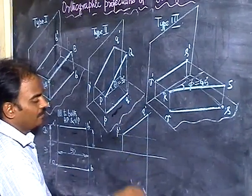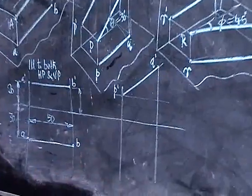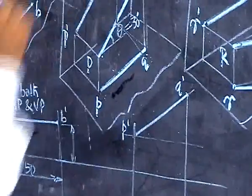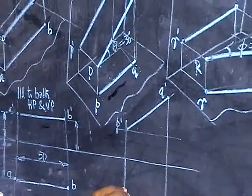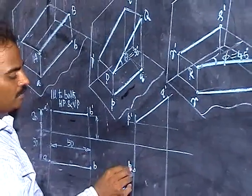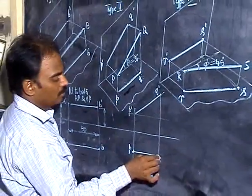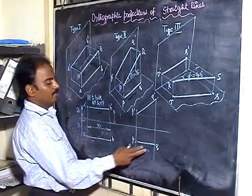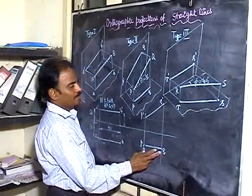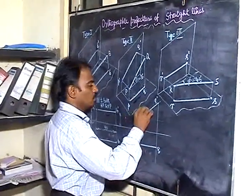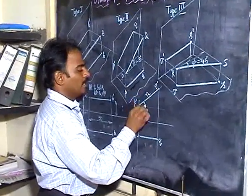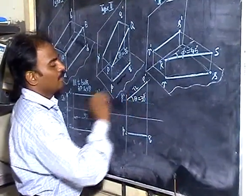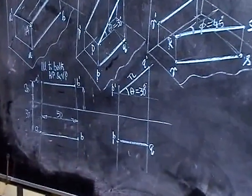Draw a line perpendicular through P'. The in-front distance is common for both P and Q, so take that in-front distance and place point P, then draw a horizontal line. You will get the answer PQ. Note that PQ is of shorter length, while P'Q' is of true length — this is the true length. You are getting the true inclination on the front view. Therefore, you can say the straight line is inclined to HP and parallel to VP.